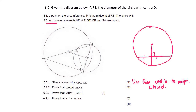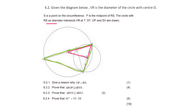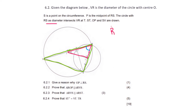Question 6.2.2: prove that triangle ROP is similar to triangle RVS. The first thing I identify is that the two angle R's are the same — they will be common. So we can say angle R equals angle R, and that's because of common.